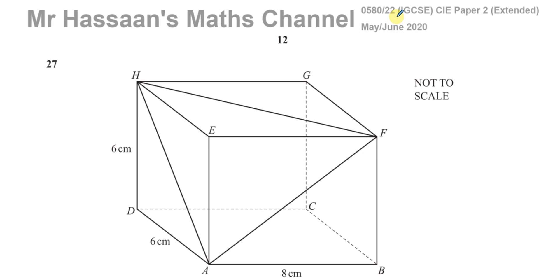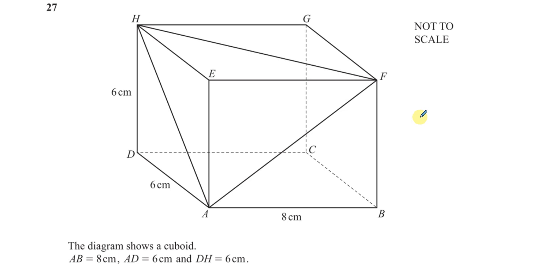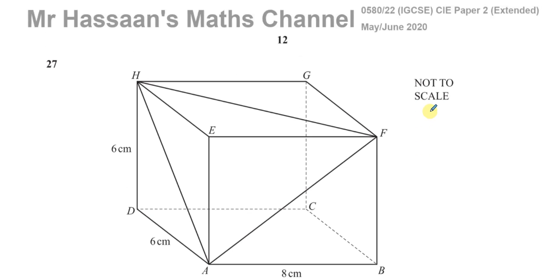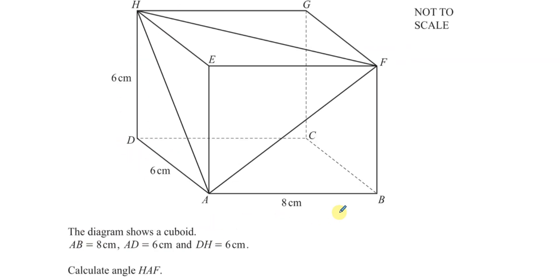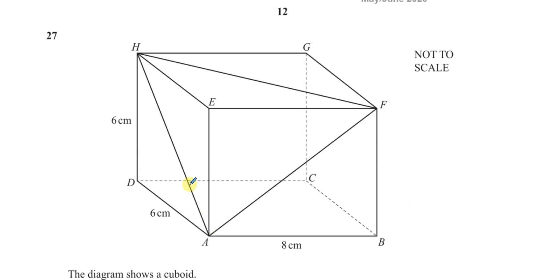This question here is the last question on the paper. It is about 3D trigonometry. You've got this cuboid with the dimensions given. It says AB is equal to 8 cm, AD is 6 cm and HD is also 6 cm. It says calculate the angle HAF. It's kind of three-dimensional.